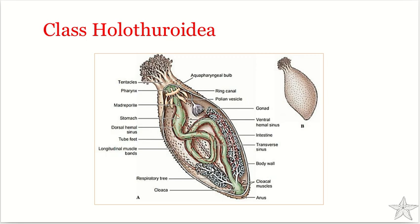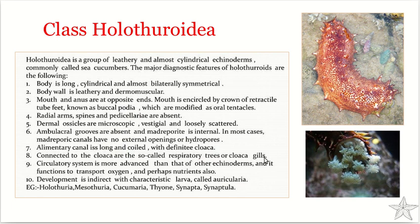When the tubules contract, water is expelled. Respiratory gases and nitrogenous wastes move between the coelomic fluid filling the body cavity and the seawater inside the tubules. Gaseous exchange takes place across the tubules between the coelomic fluid and the water inside the respiratory tree, aiding in both respiration and waste removal. This structure is known as the respiratory tree or cloacal gill, and is very unique to Holothuroidea.